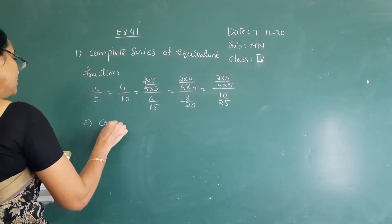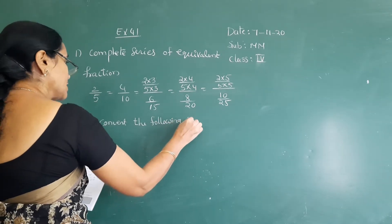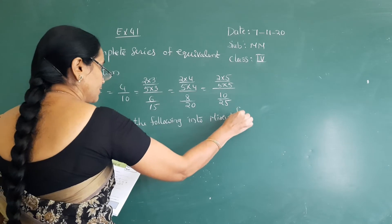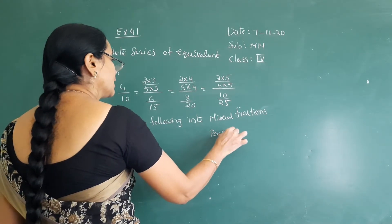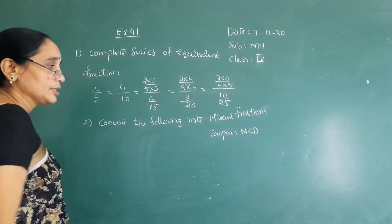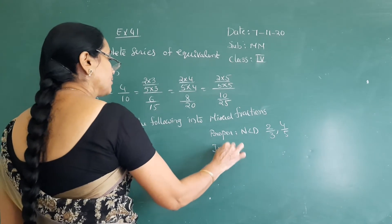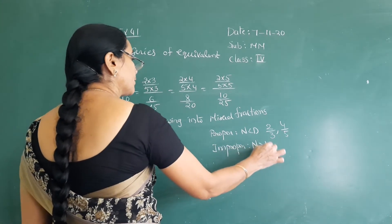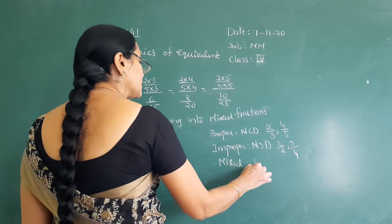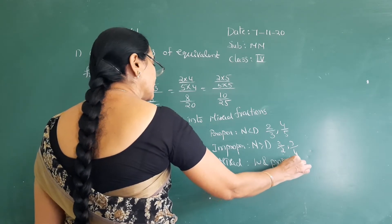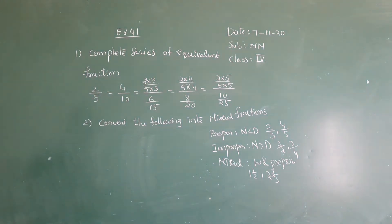See the second question: convert the following into mixed fractions. Mixed fractions means it is a combination of a whole number and a proper fraction. Proper fraction means the numerator is less than the denominator. Improper fraction means the numerator is greater than the denominator — like 3 by 2, 5 by 4. Mixed fraction means a combination of a whole and a proper fraction, like 1 and 2 by 3.